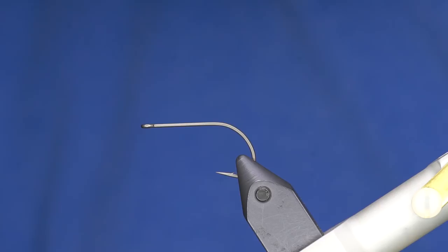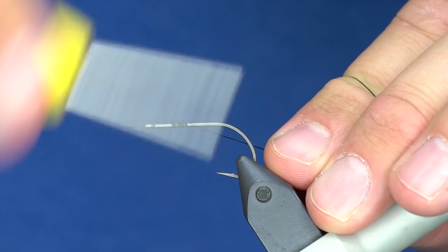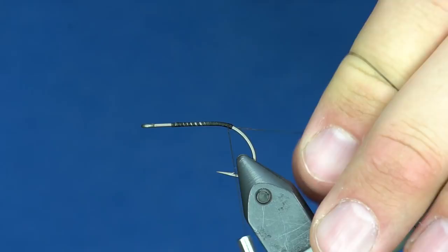This is a size 4 hook, very similar in size to Gamakatsu B10S. I'm using 210 denier Danville just in black - the color of thread really does not matter on this fly at all.